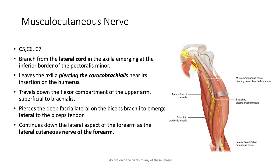The musculocutaneous nerve, using a systematic structured approach: it gets its innervation from the C5, C6, C7 nerve roots. It is a branch from the lateral cord in the axilla and emerges at the inferior border of pectoralis minor. It leaves the axilla by piercing the coracobrachialis muscle near its insertion on the humerus. It travels down the flexor compartment of the upper arm, superficial to brachialis, then pierces the deep fascia lateral to the biceps brachii to emerge lateral to the biceps tendon. It then continues down the lateral aspect of the forearm as the lateral cutaneous nerve of the forearm.